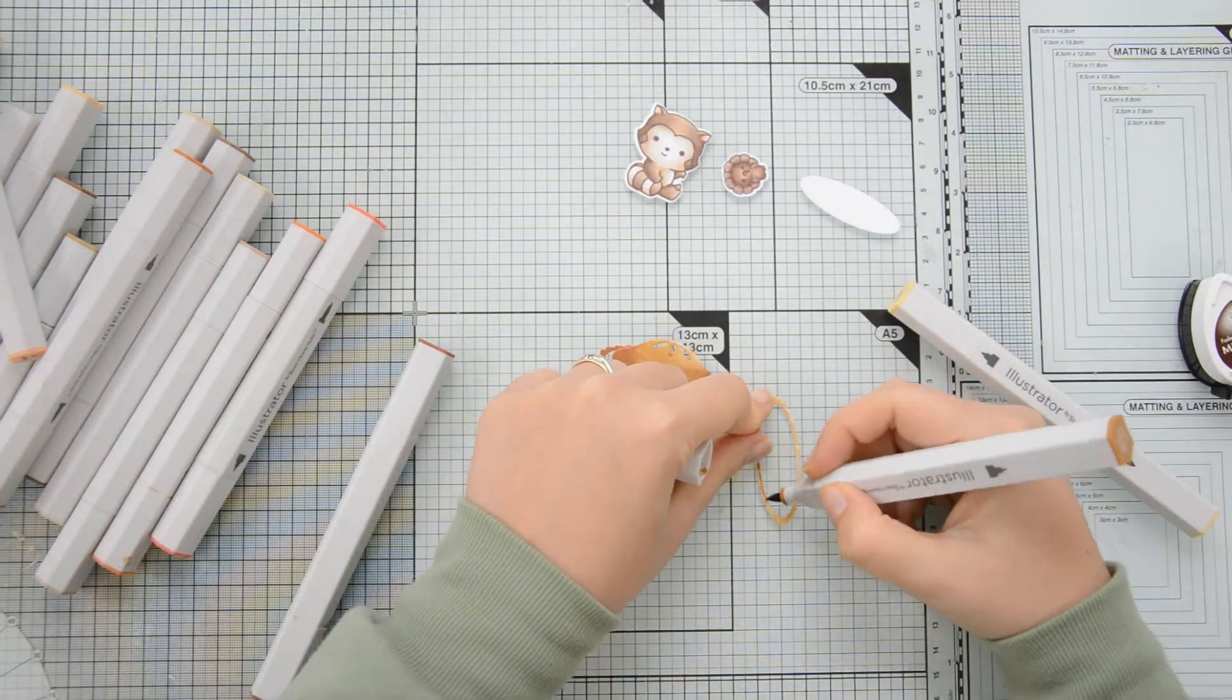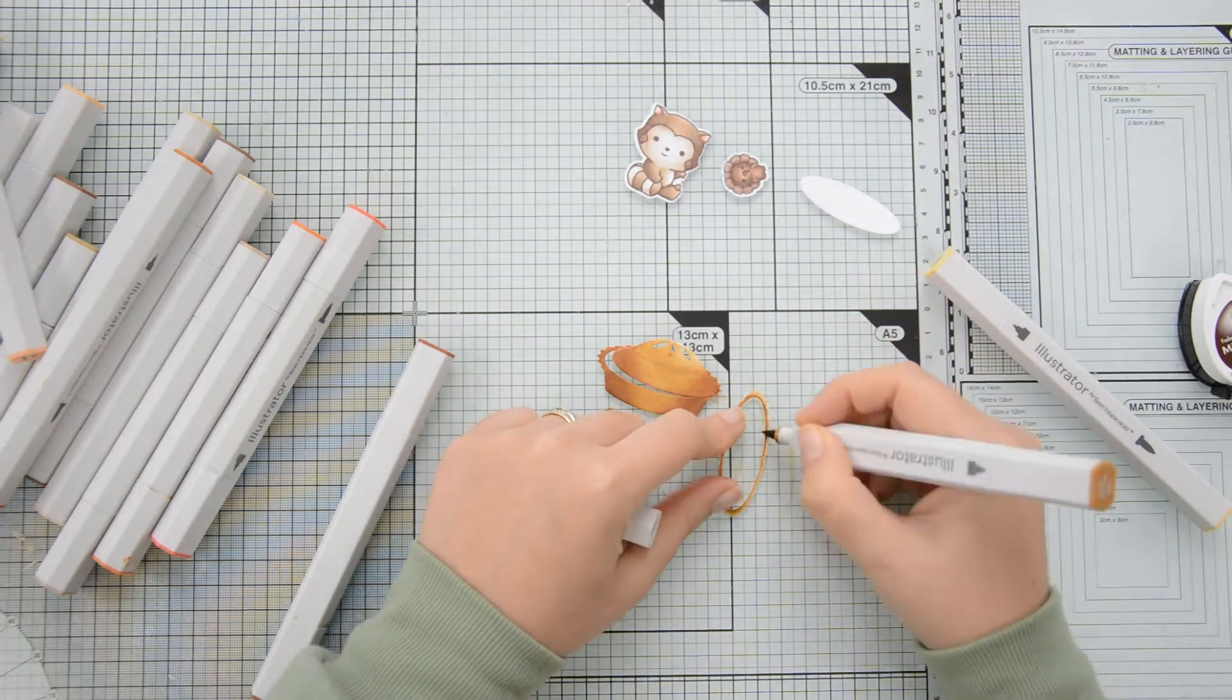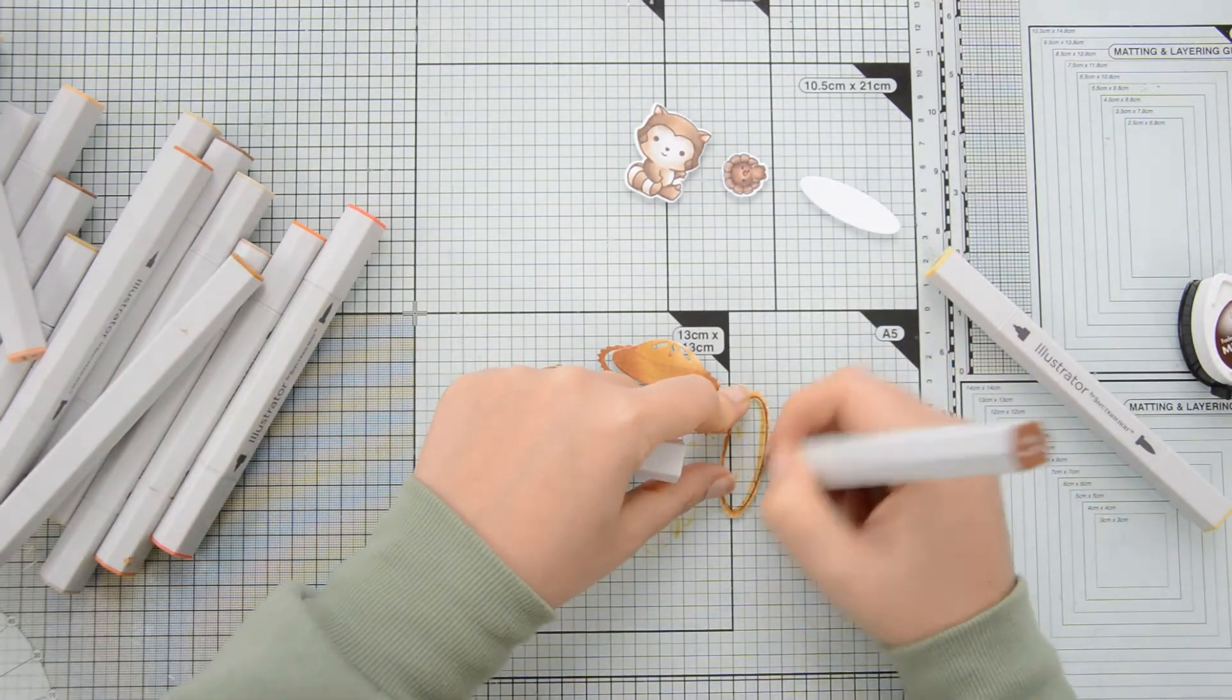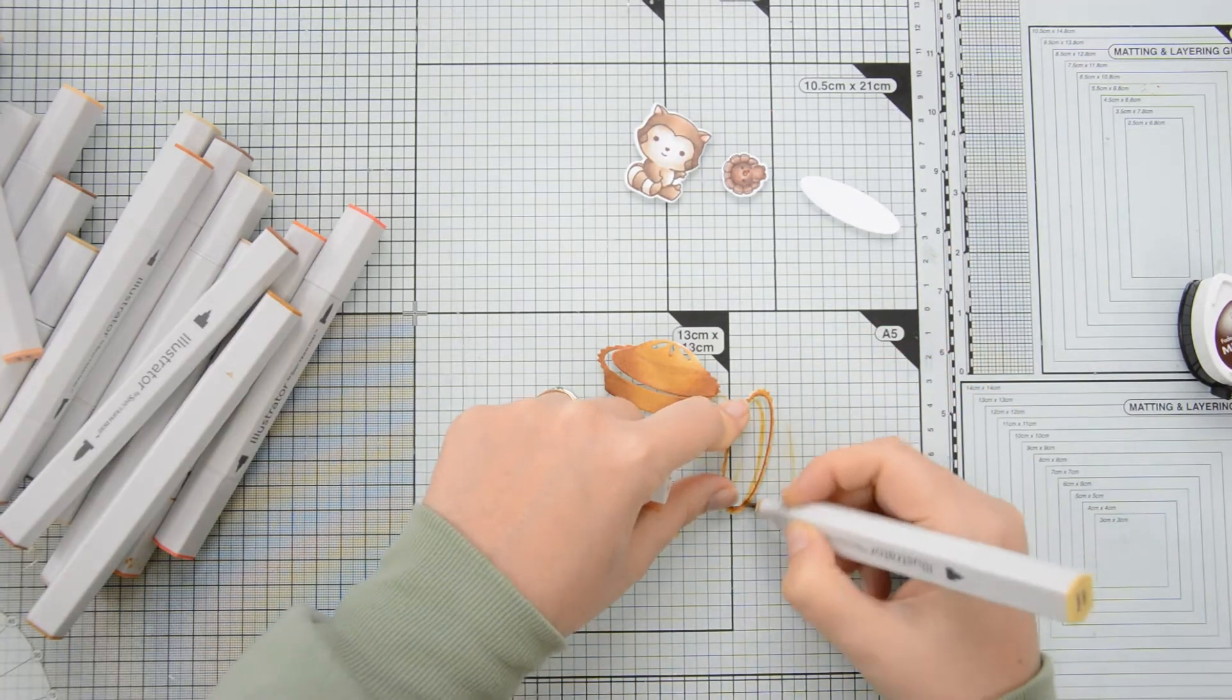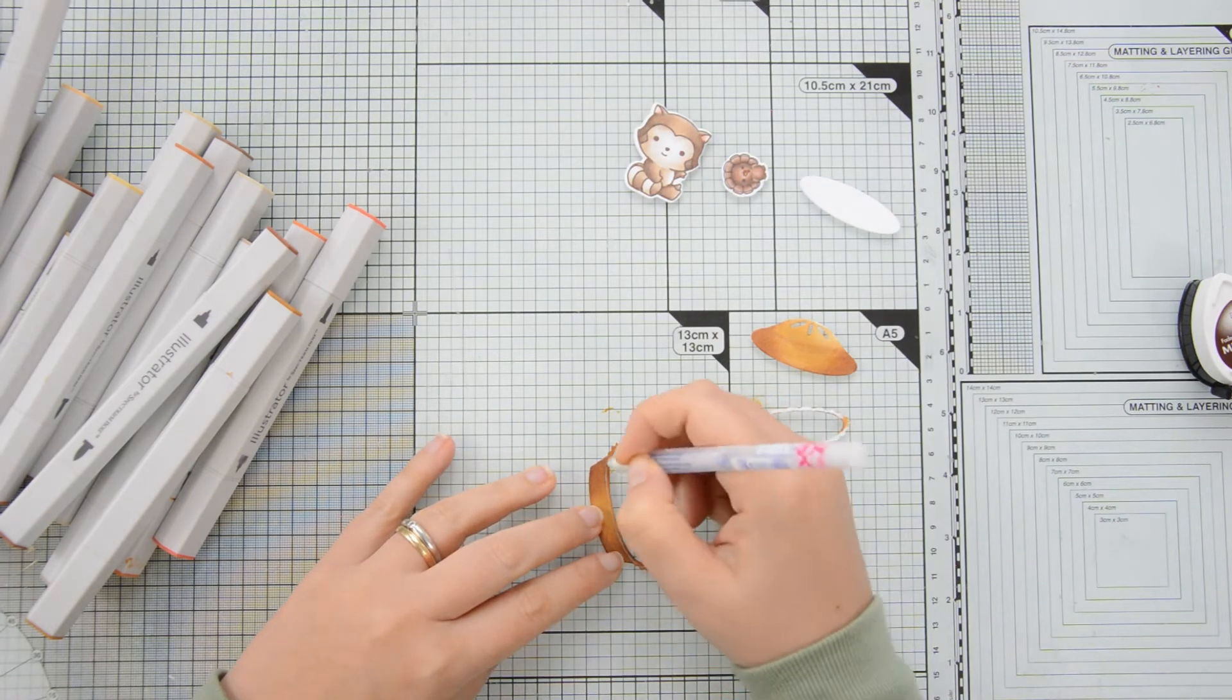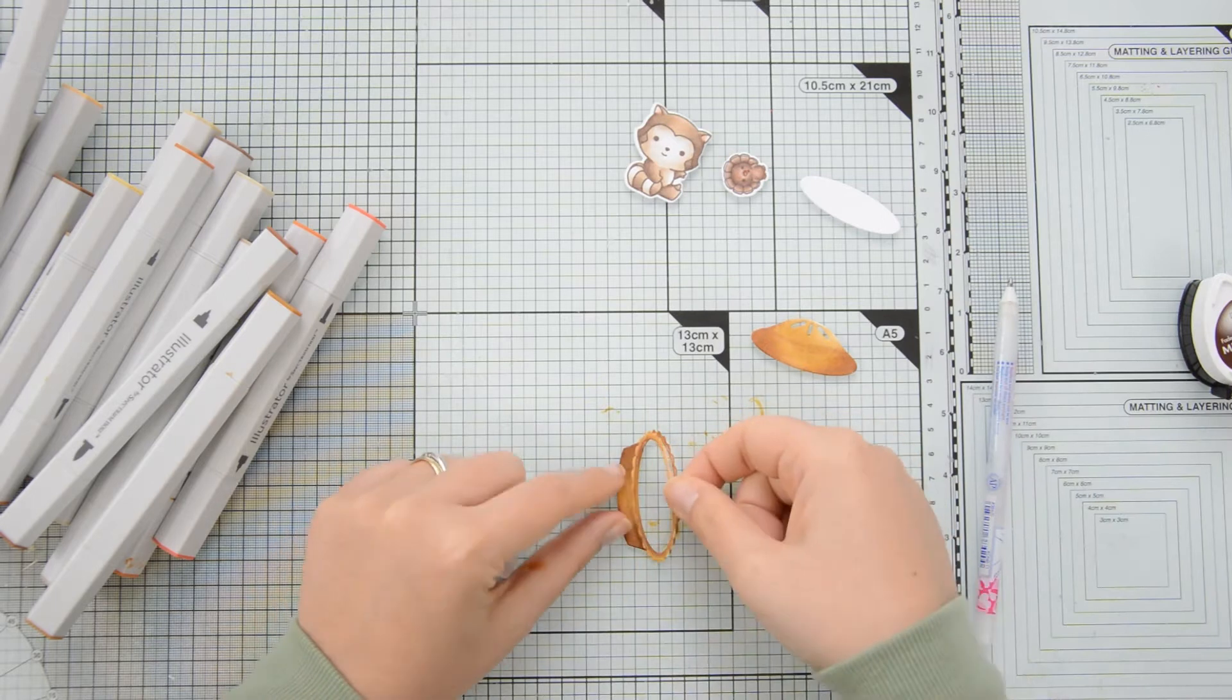I also die cut the rim of the pie and I colored it again with those same GB9, GB7 and GB3 markers. Once I was done coloring I started assembling the pie and because this die cut is so thin I'm going to use a glue pen to adhere the rim to the base of the pie itself.